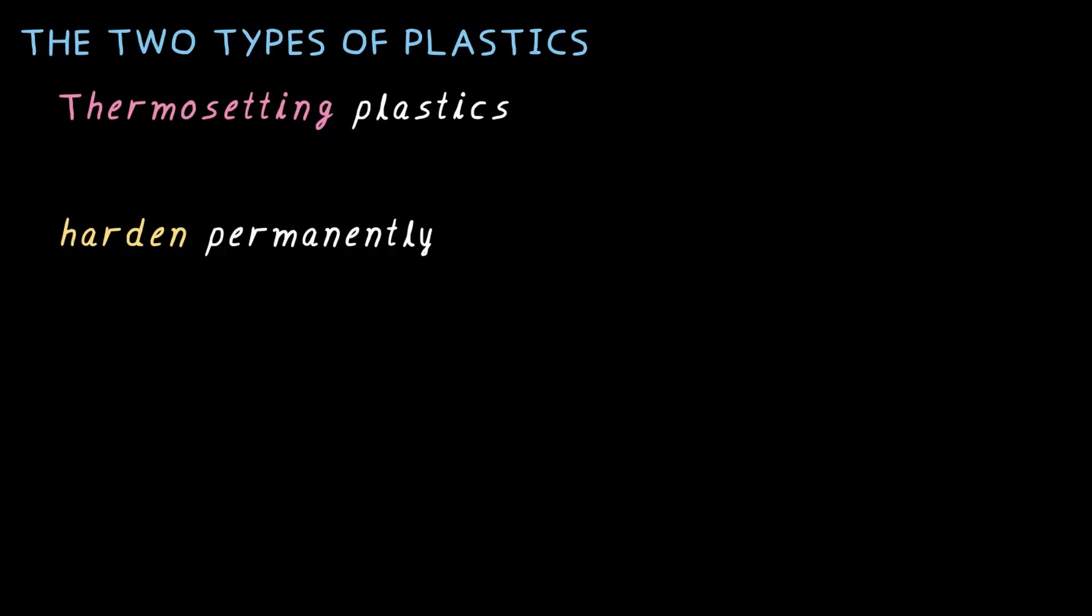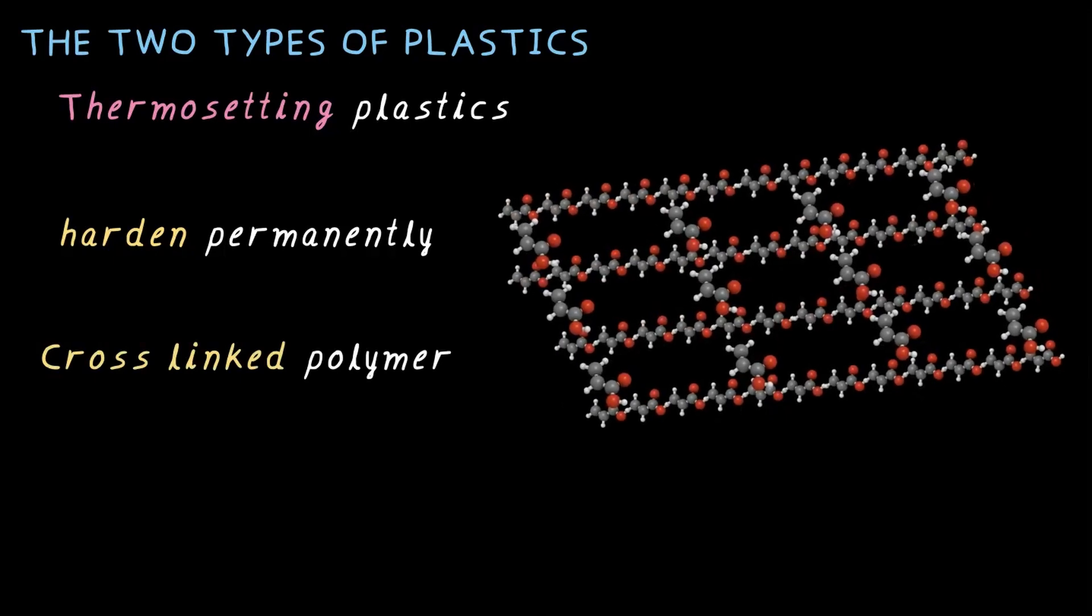Why does this happen? Well, thermosetting plastics are made of cross-linked polymers, like the one you see here in the picture. Once they are set in, they cannot be untangled. That's exactly what happens with thermosetting plastic.